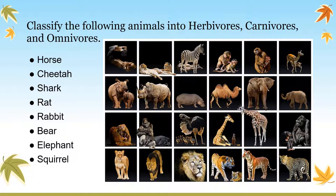Rabbit is a herbivore animal as it eats small fruits, grass, and leaves. Bear is an omnivore animal as it eats insects, fish, fruits, and grass. Elephant is a herbivore animal as it eats fruits and other plant-based food. Squirrel mostly eats nuts but sometimes feeds on small insects, so it is an omnivore animal.